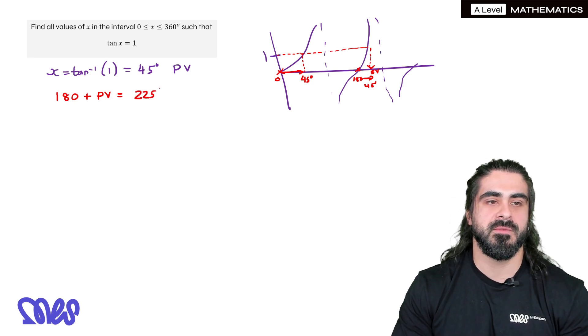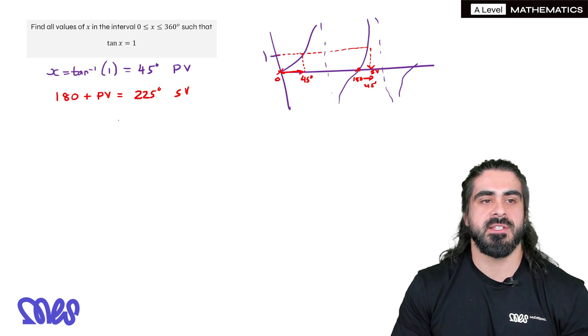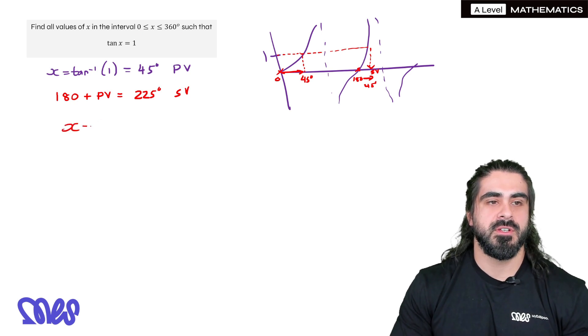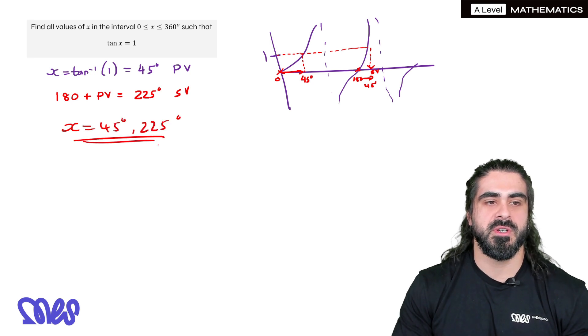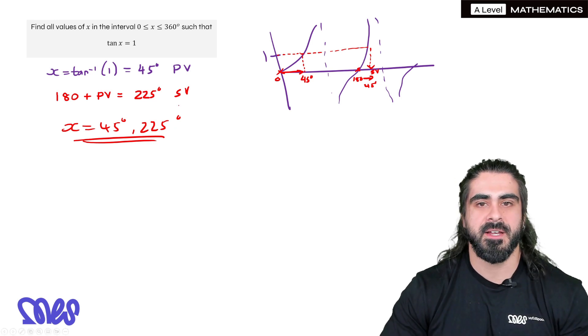So for tan, it never changes guys. You always do 180 plus whatever the primary value is to get our secondary value. And in this case, it'll be 225 degrees. And then also you notice that between 0 and 360, there is only two values. So only two values here are 45 and 225 degrees and that's it. So I need you to remember 180 plus primary value for tan.